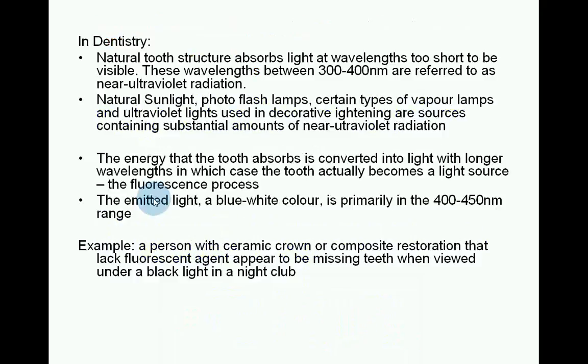In dentistry, natural tooth structure absorbs light at wavelengths too short to be visible. These wavelengths between 300 to 400 nanometers are referred to as near ultraviolet radiation. Natural sunlight, photo flash lamps and certain types of vapour lamps and ultraviolet lights used in decorative lighting are sources containing substantial amounts of near ultraviolet radiation. The energy that the tooth absorbs is converted into light with longer wavelengths, in which case the tooth actually becomes a light source — the fluorescence process. The emitted light, a blue-white colour, is primarily in the 400 to 450 nanometer range.